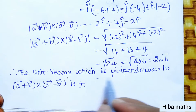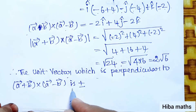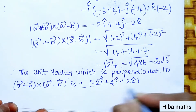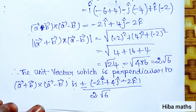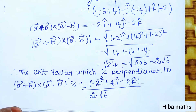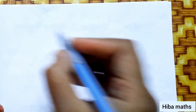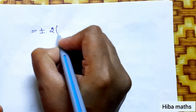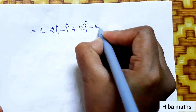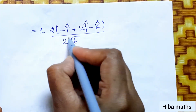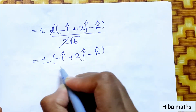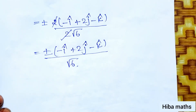The unit vector perpendicular to A+B and A-B equals (A+B) × (A-B) divided by its magnitude: (-2i+4j-2k) divided by 2√6. Taking 2 common from the numerator and cancelling, the final answer is plus or minus (-i+2j-k) divided by √6. Thank you so much for watching.